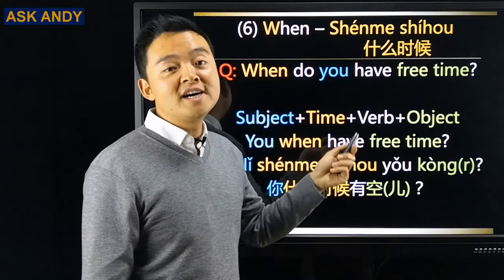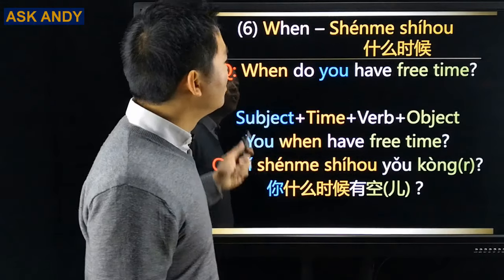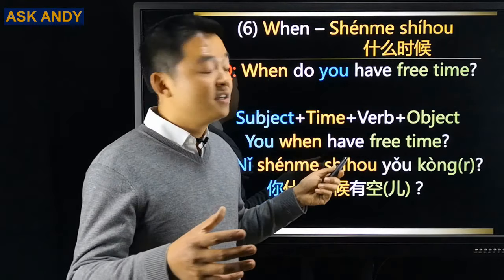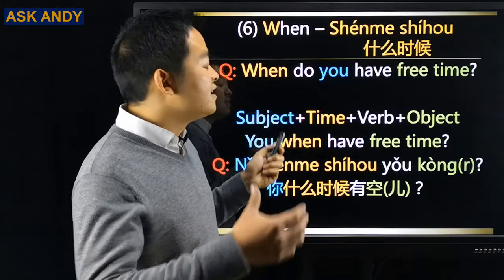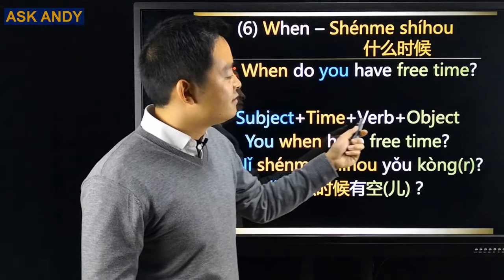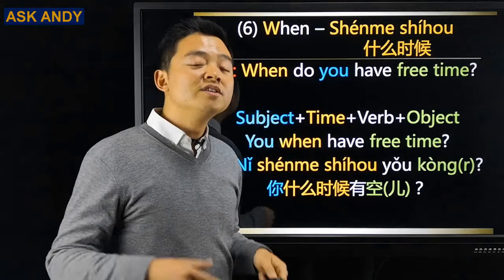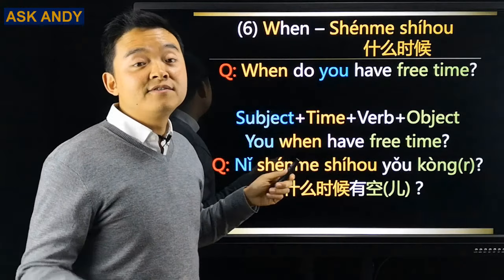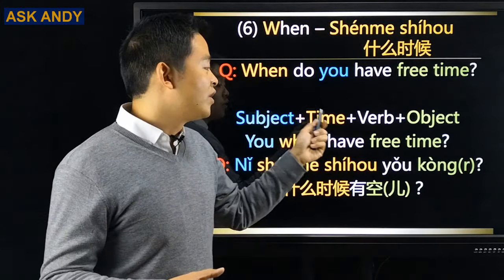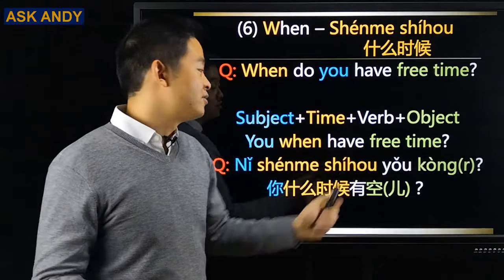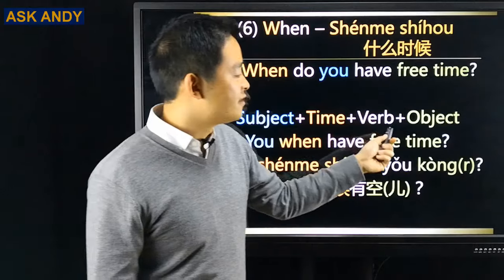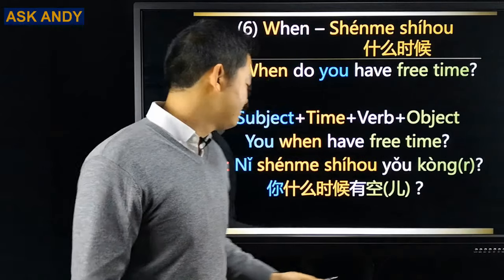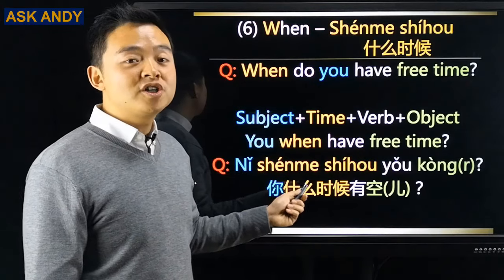Number six: when — 什么时候. This is more complicated because time goes between subject and verb: Subject – Time – Verb – Object. 'When do you have free time?' becomes: you / when / have / free time → 你什么时候有空?